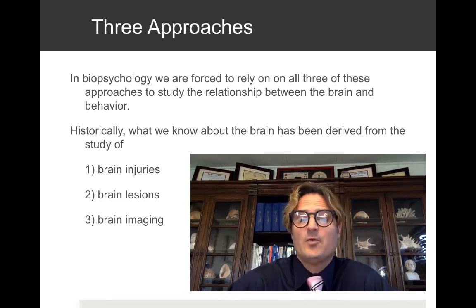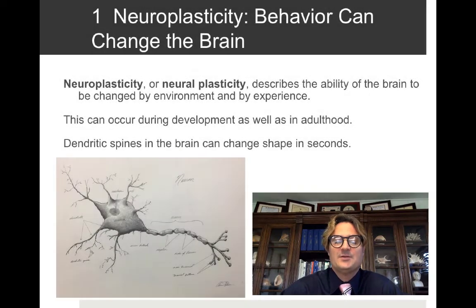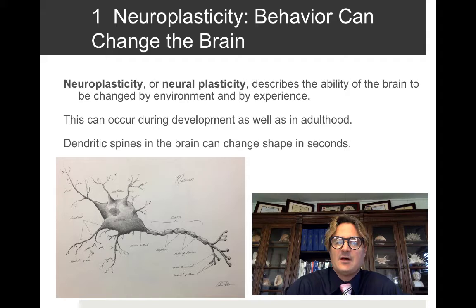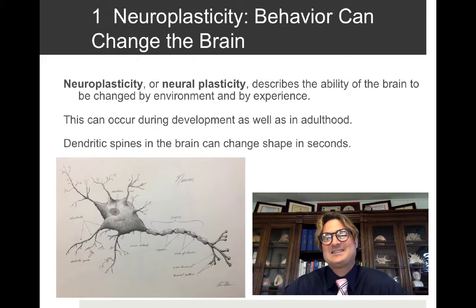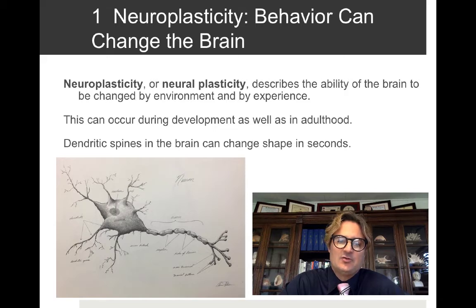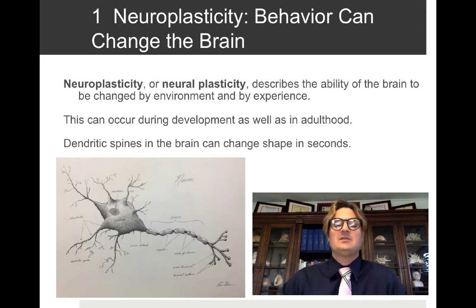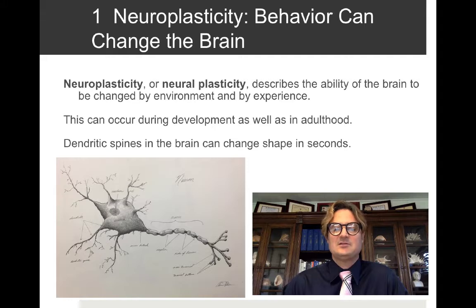Neuroplasticity describes the ability of the brain to change or be changed by environment and experience, and this can occur during development as well as in adulthood. The dendritic spines of the brain can change shape in seconds. A neuron is a cell that can send a signal — a special ability that allows it to play a key role in what it is to be human, allowing us to think, reason, and perceive.